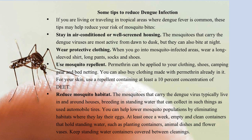For your skin, use a repellent containing at least a 10% concentration of DEET. Reduce mosquito habitat: the mosquitoes that carry the Dengue virus typically live in and around houses, breeding in standing water that can collect in things such as used automobile tires. You can help lower mosquito populations by eliminating habitats where they lay their eggs. At least once a week, empty and clean containers that hold standing water, such as planting containers, animal dishes, and flower dishes. Keep standing water containers covered between cleanings.